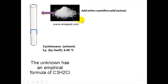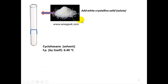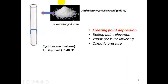This white crystalline solid will be our solute. The minute you add the solute to the solvent you get a solution, but also other things happen to this new solution as well. These are known as colligative properties. As an example, the freezing point will actually be lower than 6.4 degrees the minute you add a solute to the solvent.